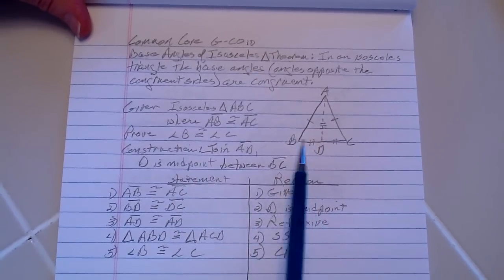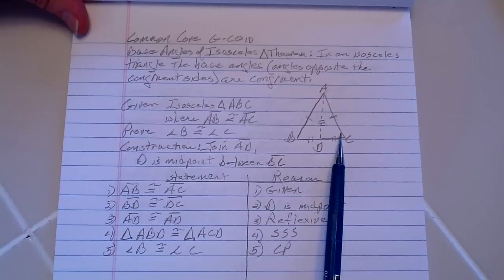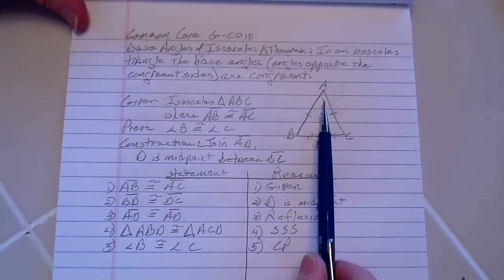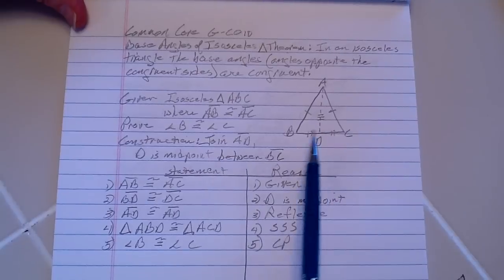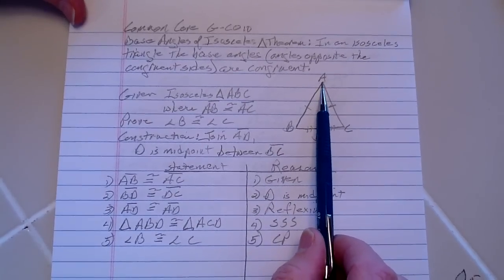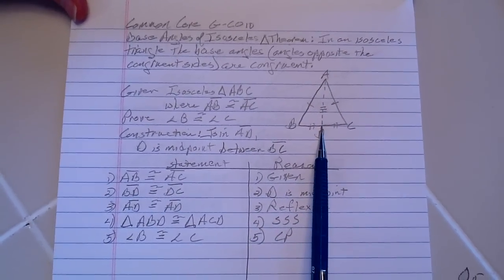So we can try to prove that the base angles, angle B and angle C, are congruent. So what we're going to do is construct AD, which D is the midpoint between BC, and so we've conducted from this vertex down to this point right here, which is D.